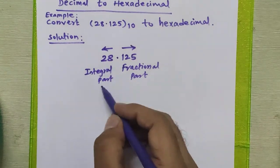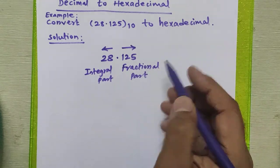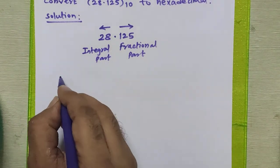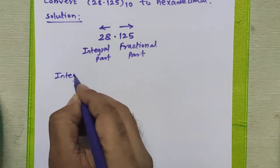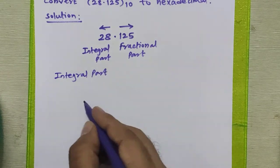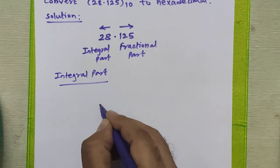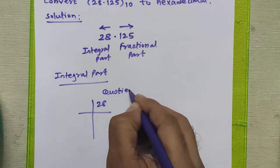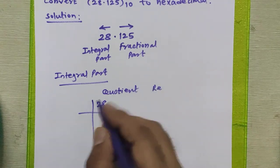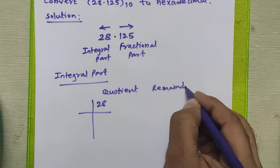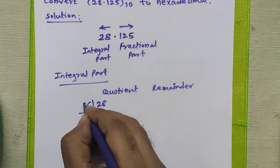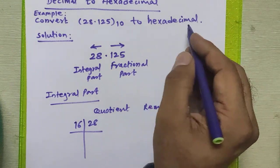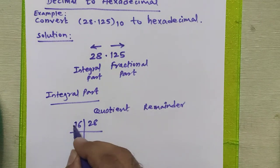There is a different procedure to convert the integral part to hexadecimal and the fractional part to hexadecimal. We will first see how to convert the integral part, 28, to hexadecimal. We successively divide this number by 16 because hexadecimal number system base is 16.